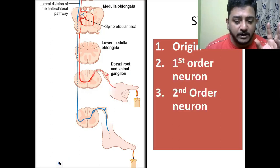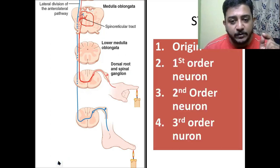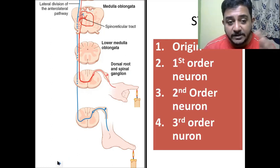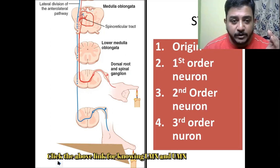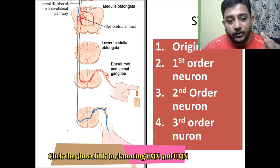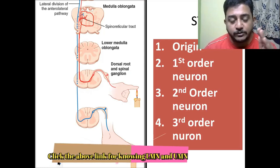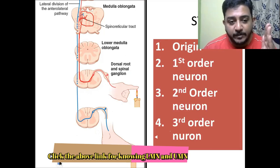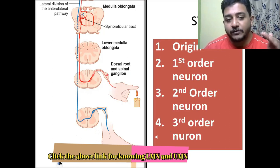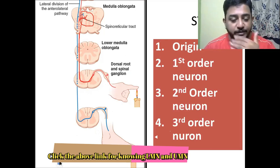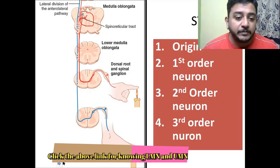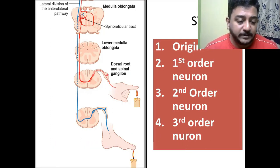First order, second order, and third order neuron terminology is applicable only for the ascending tracts. When it comes to the descending tract, we call them the upper motor neuron and the lower motor neuron. Please remember this — do not say upper motor neuron and lower motor neuron for a sensory tract, which is a common mistake people make in VAWA examinations.